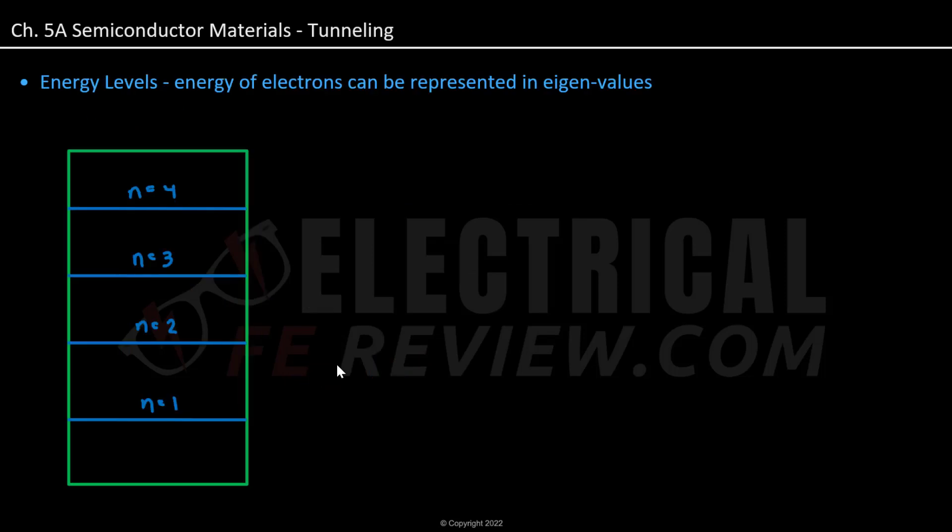Another way we can look at tunneling is using energy levels, where energy of electrons can be represented in eigenvalues, where we have n=1, n=2, n=3, n=4 eigenvalues.